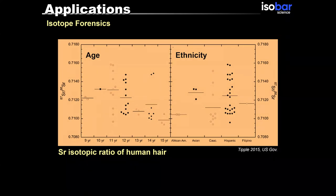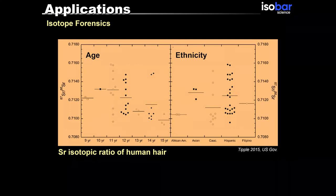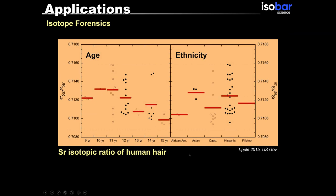This is another interesting study. This is measuring strontium isotopic ratios in human hair. The study was done in one of the school districts in New York, and they found out that different age levels and different ethnicities are showing different strontium signatures in their hairs.